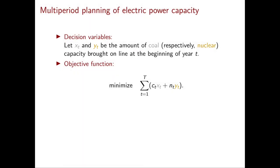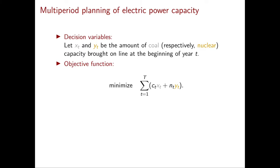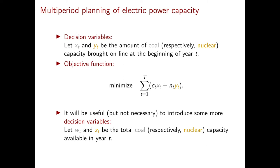We can now write down the objective function — we want to minimize the total cost. The cost in year t is C_t times x_t to bring online the coal capacity plus N_t times y_t to bring online the nuclear capacity, and we sum over all t's. Before getting to the constraints I want to introduce some additional auxiliary decision variables w_t and z_t, representing the total coal and nuclear capacity available in year t.